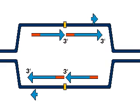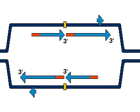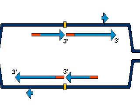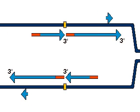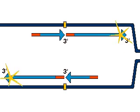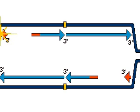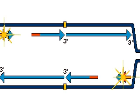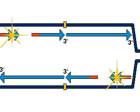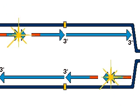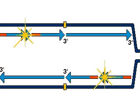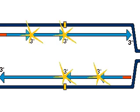The replication fork continues to move along the DNA molecule. Synthesis of the leading strand results in a continuous strand of DNA with one RNA primer. The RNA primer is eventually replaced with DNA. Synthesis of another segment of the lagging strand begins with the RNA primer. Again, DNA nucleotides are added to this primer in the 5' to 3' direction until the first primer on the lagging strand is reached. The first primer is replaced with deoxyribonucleotides and the DNA fragments are joined.